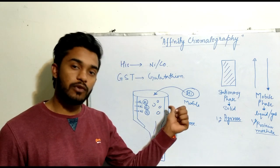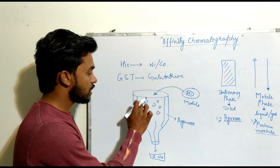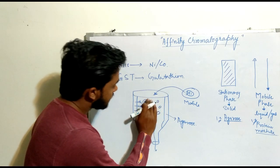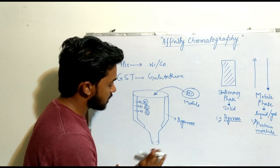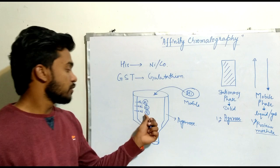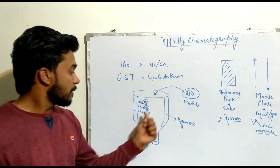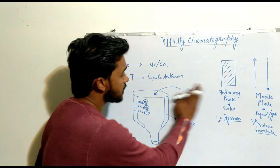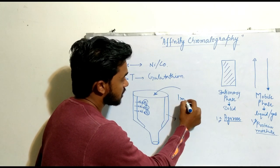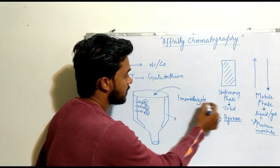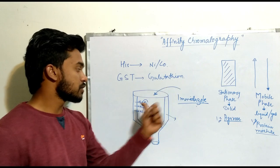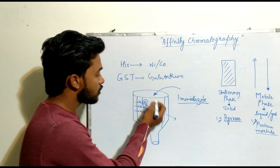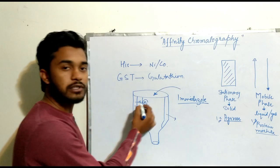After the other molecules are washed out, the histidine molecules remain bound to nickel or cobalt. To separate these histidine molecules from the column, a process known as elution is used. We apply a chemical called imidazole into the column. Imidazole breaks down the interaction between histidine and nickel or cobalt, resulting in the separation of histidine molecules.